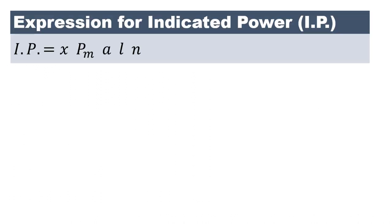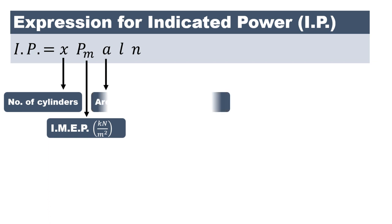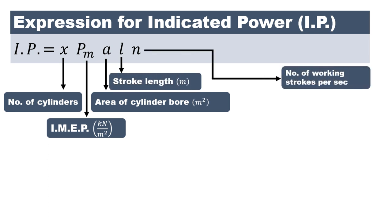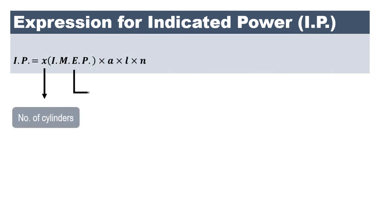Now let us balance the units. x (number of cylinders) has no unit. pm (mean effective pressure) is expressed in kiloPascal, that is kiloNewton per meter square. Area is in meter square, stroke length is in meter, and n is the number of working strokes per second. For a four-stroke engine, n equals N upon 2, because every two crankshaft revolutions produce one power stroke. For a two-stroke engine, every revolution produces one power stroke.